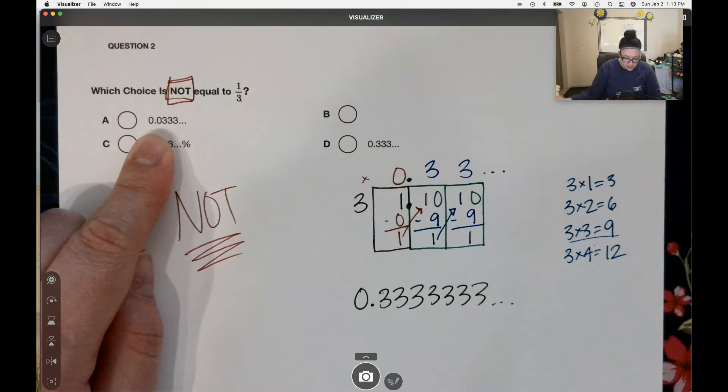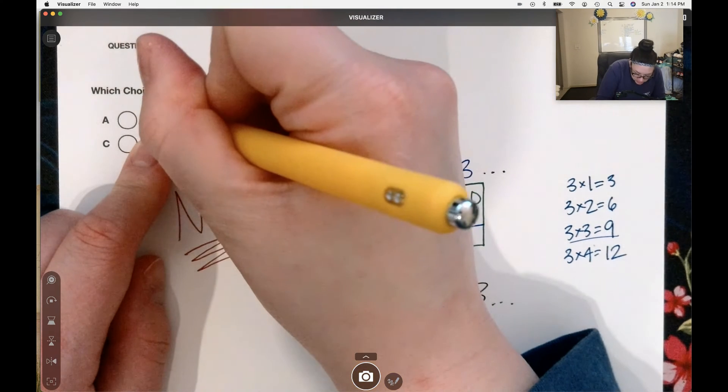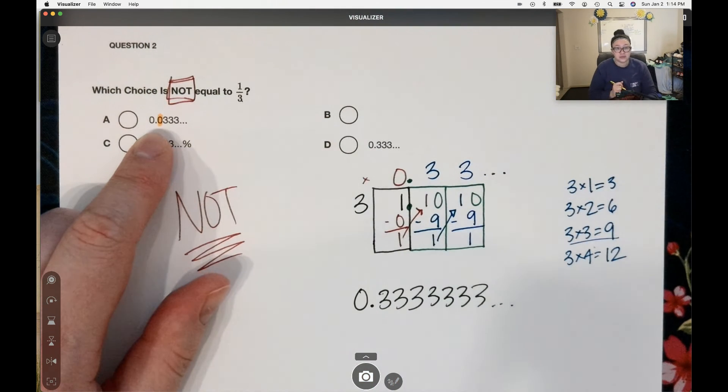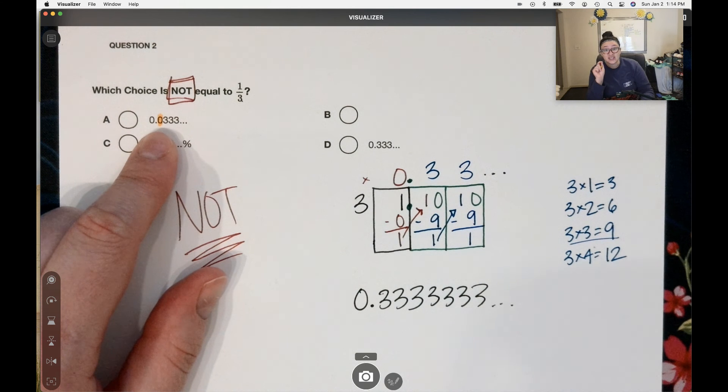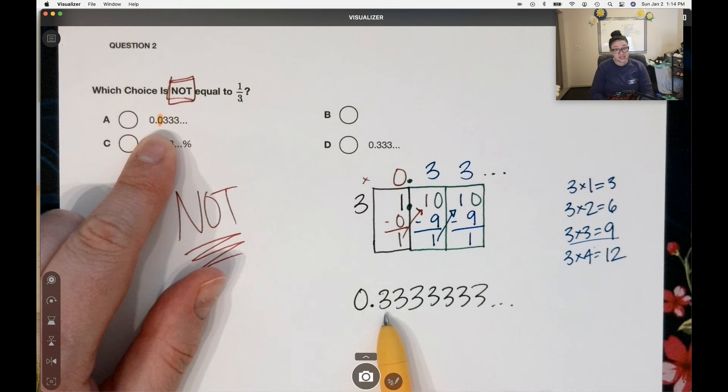A has zero point zero three, three, three, three. It looks very close to what I have here, but is it the same? No.